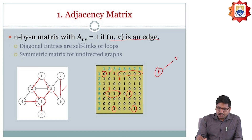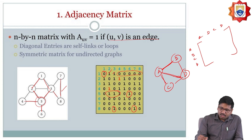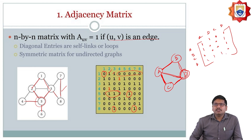Consider an undirected graph with vertices A, B, C, D. We consider the vertices as the rows and vertices as the columns. I have an edge from A to B, A to D, and A to C — so entries A-B, A-D, A-C should be equal to 1. From B there are edges to A and B to D. For C, edges go to C-A and C-D. This is how we create the adjacency matrix.